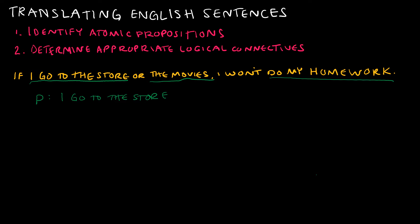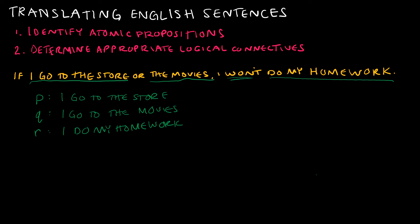It's important to understand that there are a lot of correct ways to translate these — I'm showing you one correct way. So P is 'I go to the store,' Q is 'I go to the movies,' and R is 'I do my homework.' Notice I'm looking at 'I won't do my homework' — I'm not going to represent R as that. We always represent the proposition as the positive, and if it's negative we just negate it.